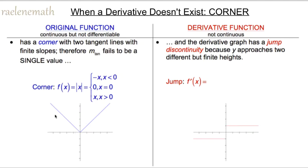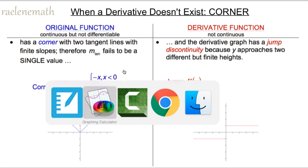Furthermore, the derivative of a corner is a function that has a discontinuity. So the original function is continuous but not differentiable or smooth, and the derivative function has a jump discontinuity. Let's take a look at the next case.